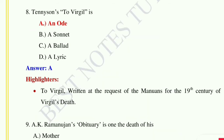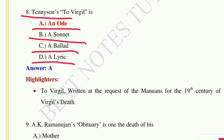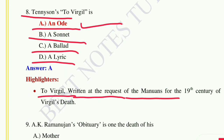Question number eight: Tennyson's 'To Virgil' is — an ode, a sonnet, a ballad, or a lyric? The answer is an ode. 'To Virgil' was written at the request of the Mantuans for the 19th centenary of Virgil's death. Question number nine: A.K. Ramanujan's 'Obituary' is on the death of his — mother, father, grandfather, or mother? The correct answer is option B, his father.